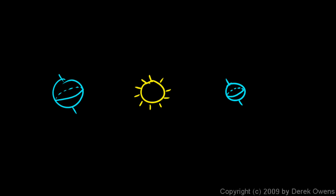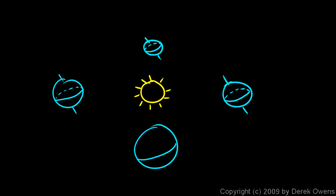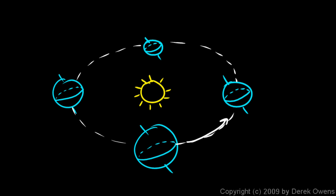Let's draw one in the back here, making it a little bit smaller, and the one in front a little bit bigger, just to aid the perspective view. We'll draw some dotted lines representing the orbit. So the earth moves around the sun like that.